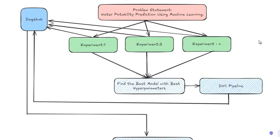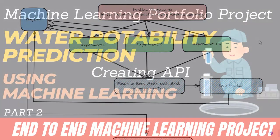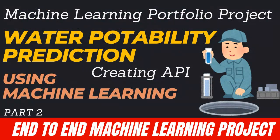In this video, we are going to create an API for our project using FastAPI. This is also called model serving. We are going to create an API for our project — Water Potability Prediction using Machine Learning. You might know I have already covered FastAPI in this MLOps playlist, so feel free to check that out if needed.